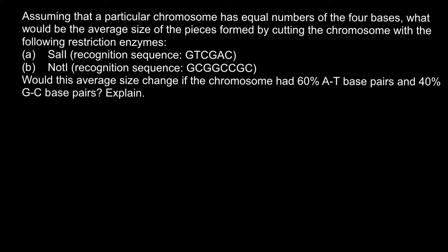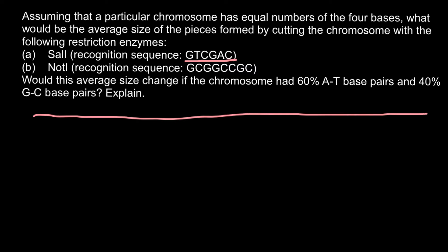Here is the first recognition sequence. Imagine we have a long piece of DNA — for example, 100,000 bases. How do we calculate the probability of finding this sequence, and how frequently can we find it on this stretch of DNA? We apply the same rule. The sequence is G, T, C, G, A, C.